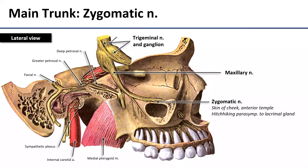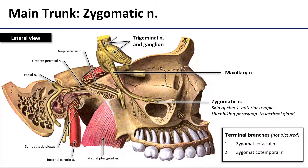Starting with the main trunk branches, the first is the zygomatic nerve, which is carrying sensory from the skin of the lateral cheek and anterior temple. It is also going to route those hitchhiking parasympathetics up to the lacrimal gland. It has two terminal branches, the zygomaticofacial and zygomaticotemporal nerves, which are unfortunately not visible in this image — I wasn't able to find any open source image, but know that these branches are there, supplying the lateral cheek and anterior temple.